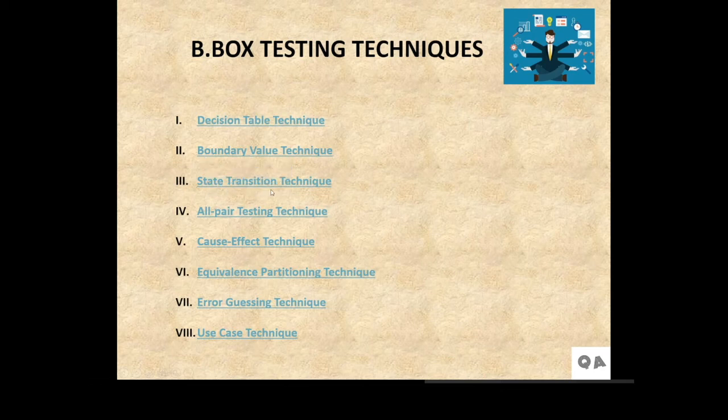Then comes the state transition technique. This technique is used to capture the behavior of the software application when different input values are given to the same function. For example, in a simple case, whenever we check for an email login to a certain page, we try different scenarios like email address and then password. But whenever we give different values to the same function, like for the email login function, we give different values, either a correct email or an incorrect email. This is the state transition technique.